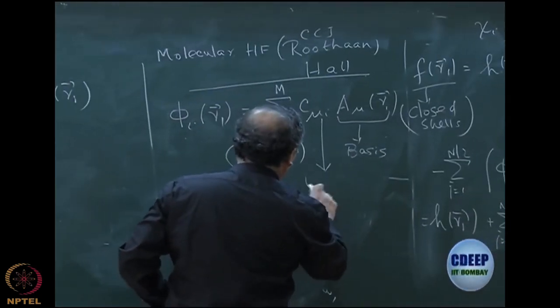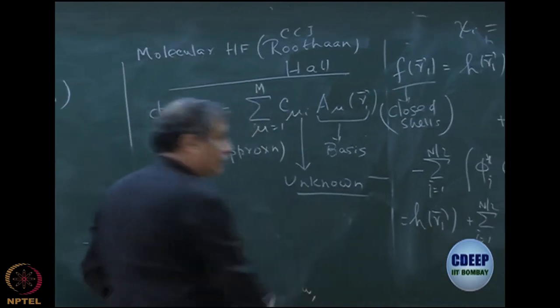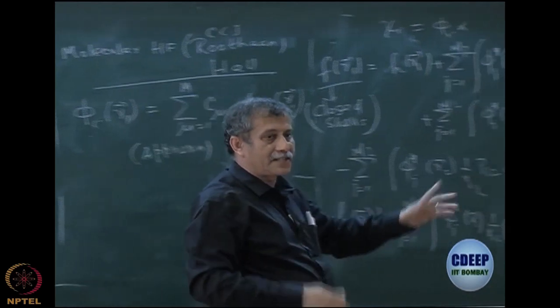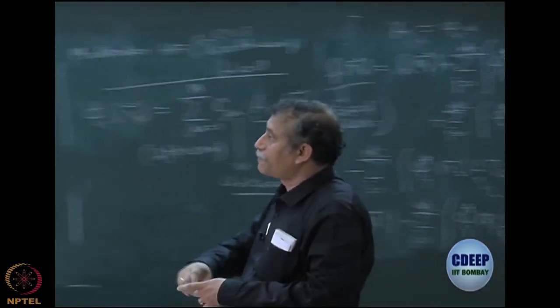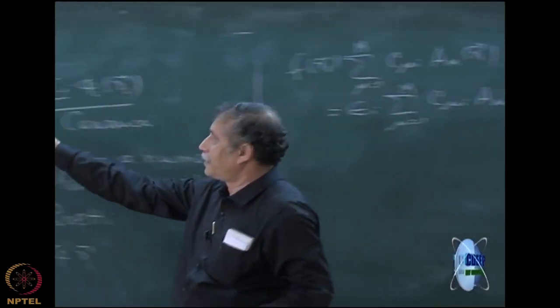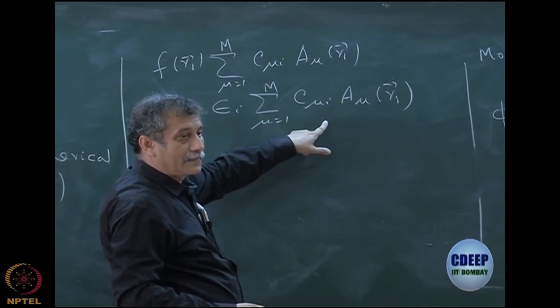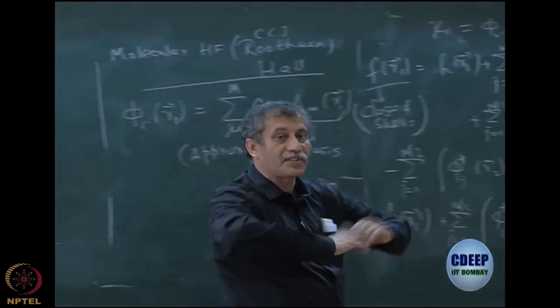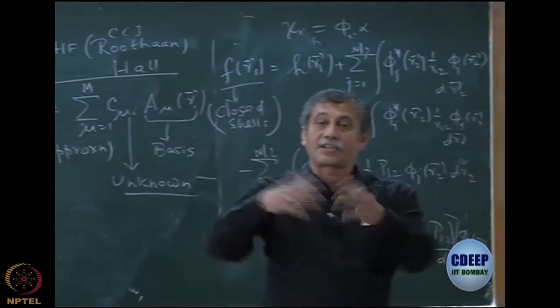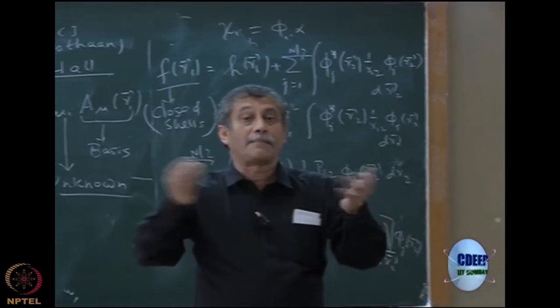So what I have done? These C mu I's are my unknown coefficients. This is known, basis is known. So your problem of Hartree-Fock was originally to find phi I of R. Now the problem of Hartree-Fock is to find these coefficients. If I know the coefficients, I know phi I of R. So my problem has changed from finding a function set of n functions or n by 2 functions. I now have a set of numbers.